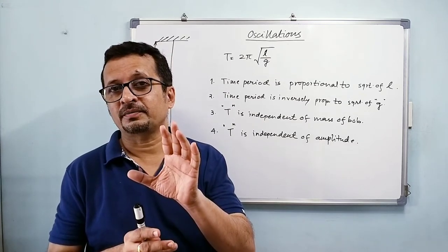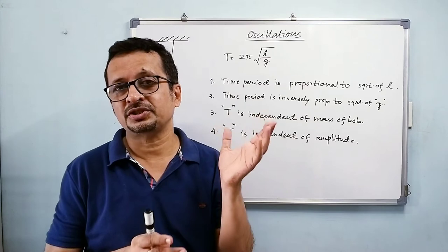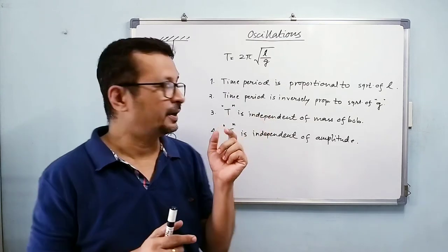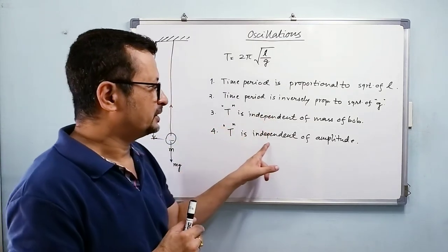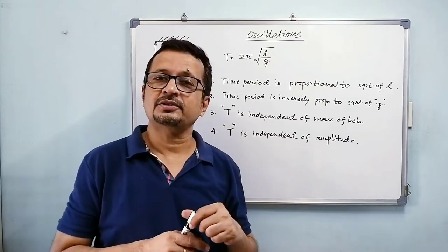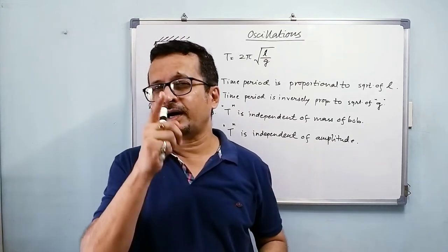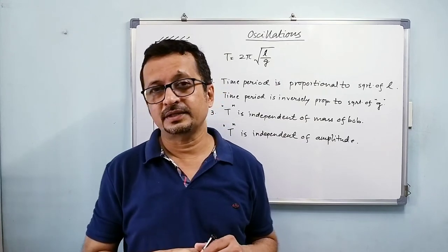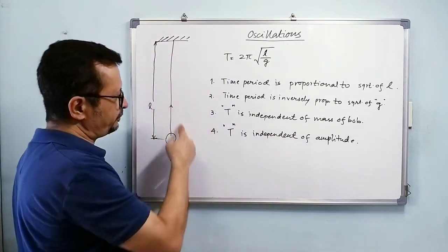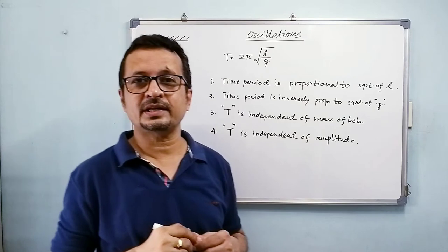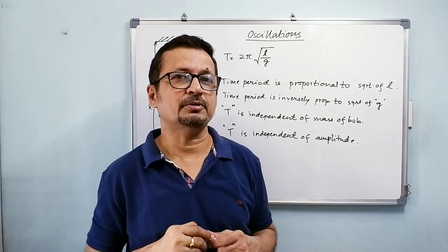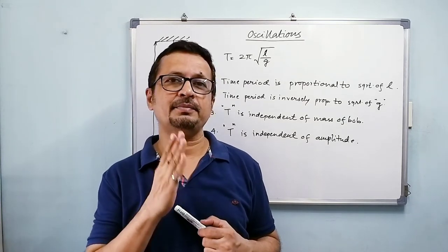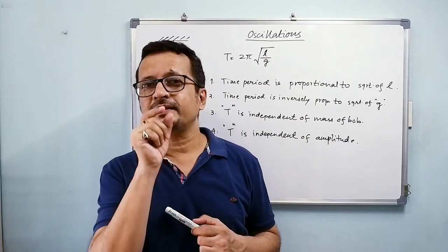Those are the assumptions here. This point: the time period is independent of amplitude. The other assumption that we had in the beginning is that the semi-vertical angle of this pendulum, the angle made by the pendulum with the vertical, that angle is small.